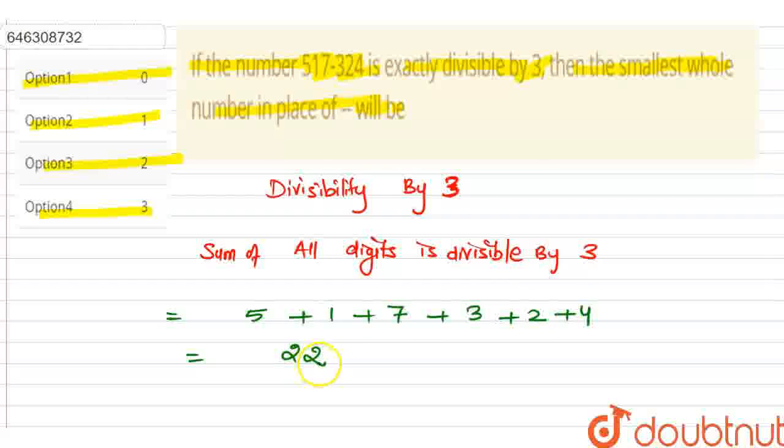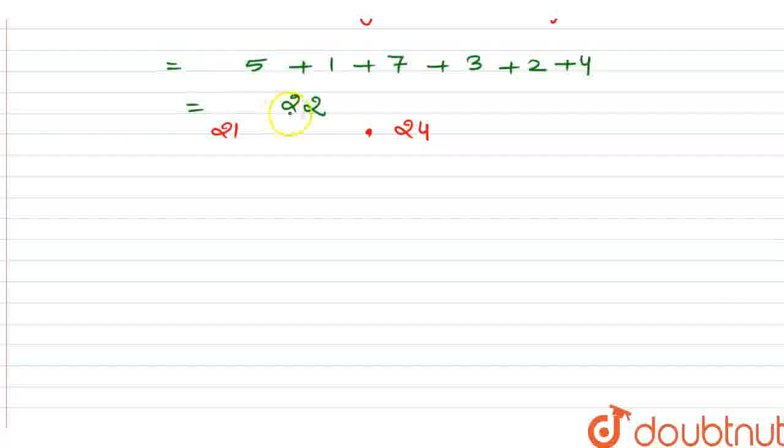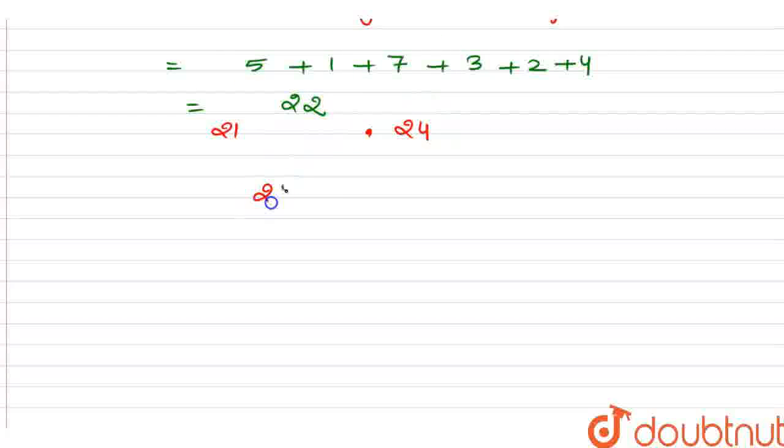As we know, 22 is not divisible by 3. To make it divisible by 3, we know that 21 is divisible by 3, but we can't make it 21 because we can't subtract a digit. So we can add 2. 22 plus 2 equals 24, which is divisible by 3.